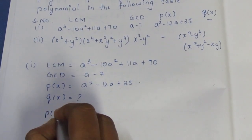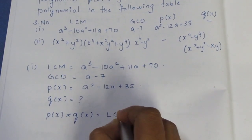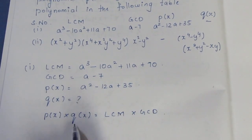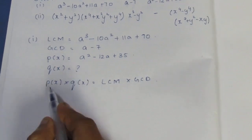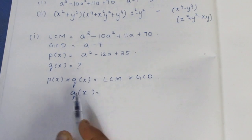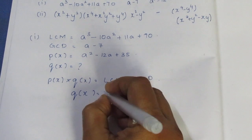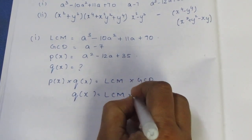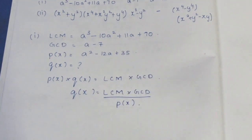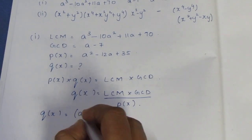So P of X into Q of X is equal to LCM into GCD. We know Q of X, so Q of X is equal to LCM into GCD divided by P of X.